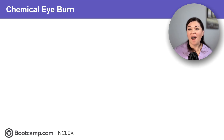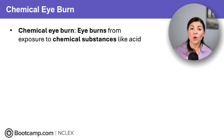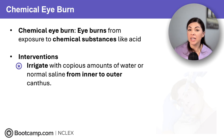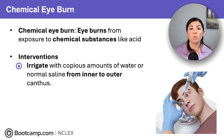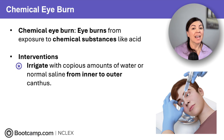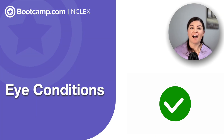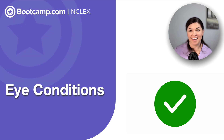And finally, our last eye trauma is chemical eye burn. This occurs when chemicals enter the eye, like pepper spray or bleach. For treatment, immediately irrigate the eye with water or saline from the inner to the outer canthus — and sometimes this requires copious amounts of irrigation fluid. So now you are ready for questions on eye conditions when taking the NCLEX.